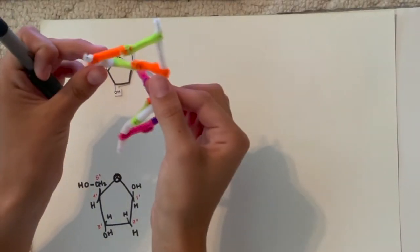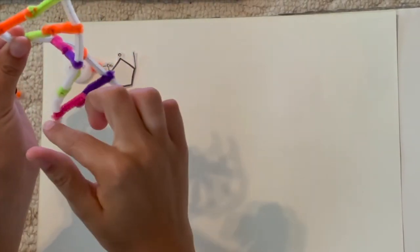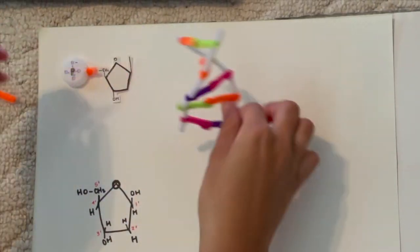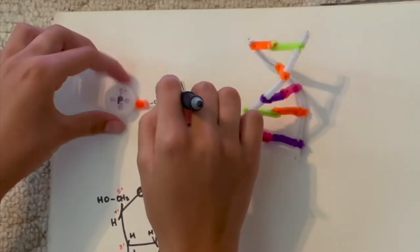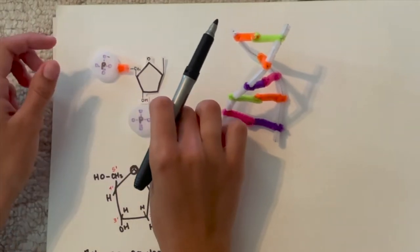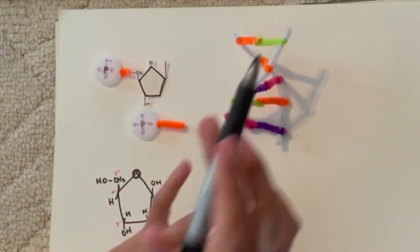The phosphate backbone of the DNA, this part right here, is made up of a phosphate and a sugar. And then to form the chain, the other phosphate comes in like this and it continues.